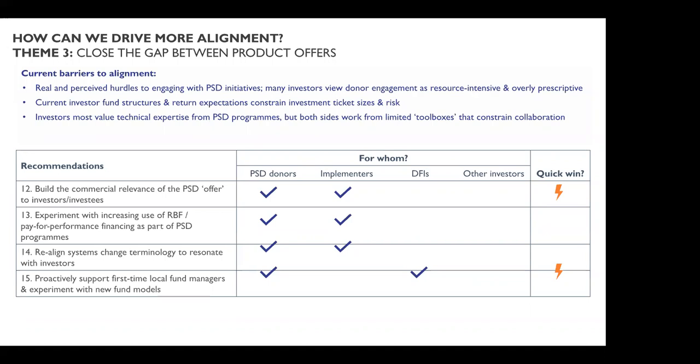Further recommendations include: experimenting with direct financing as part of PSD work, building a more nuanced and pragmatic view of delivering financial support alongside market shaping work to incentivize investor engagement; building understanding of tools like blended finance and credit guarantees; realigning systems change terminology so it resonates with investor audiences, communicating the real-world value that market-shaping approaches can offer; and supporting first-time fund managers and experimenting with new fund models — for example, running research on costs and compensation for different fund models, and potentially even piloting models with different investment processes and management fee and carried interest structures.